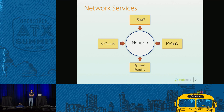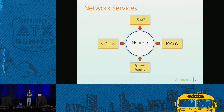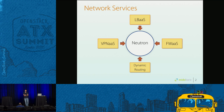The idea of creating containers for network services — otherwise said, containerizing network services — is to enable certain Neutron services such as load balancer, firewall, and dynamic routing, that is BGP or VPN, making them containers to have them as easy to deploy as possible, for example in your data center.